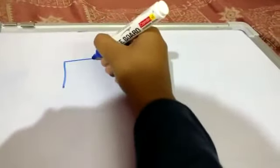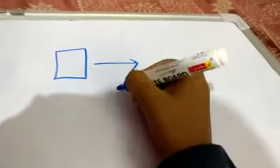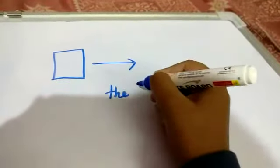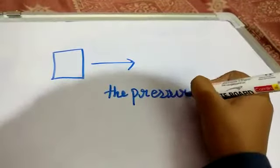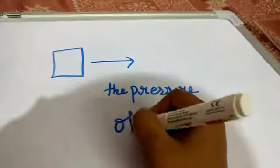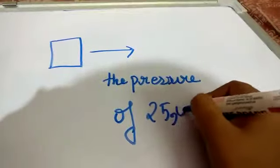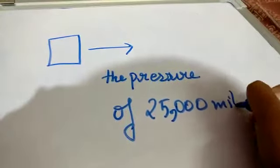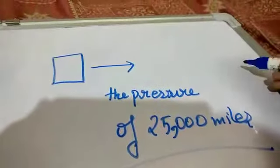So now, when the mass on earth moves, the pressure of 25,000 miles would actually come to use for once. The earth spins.